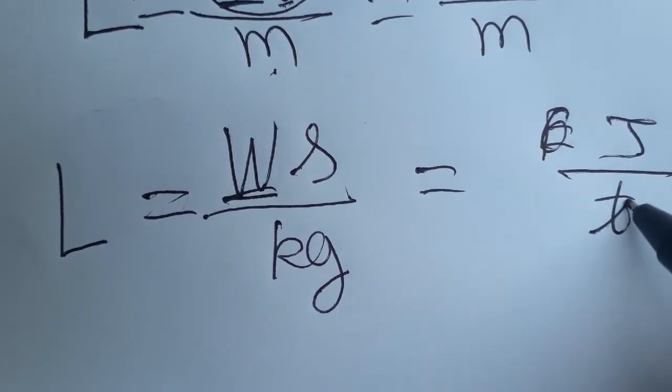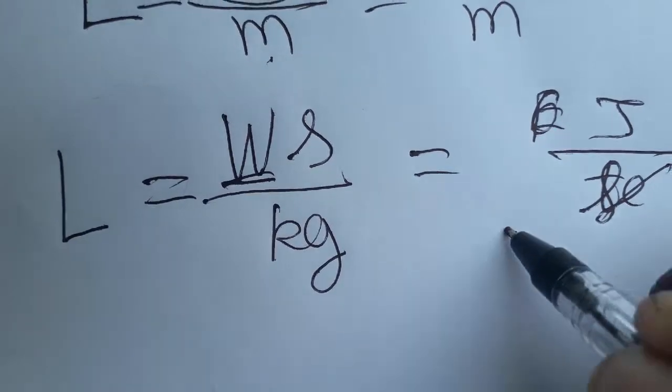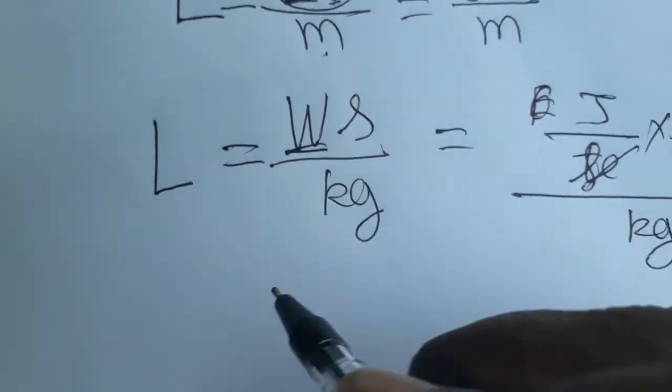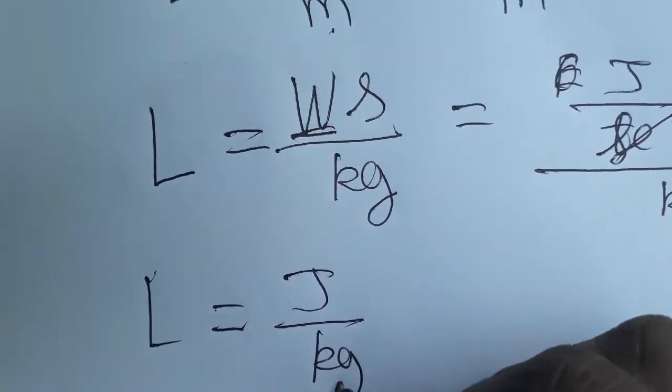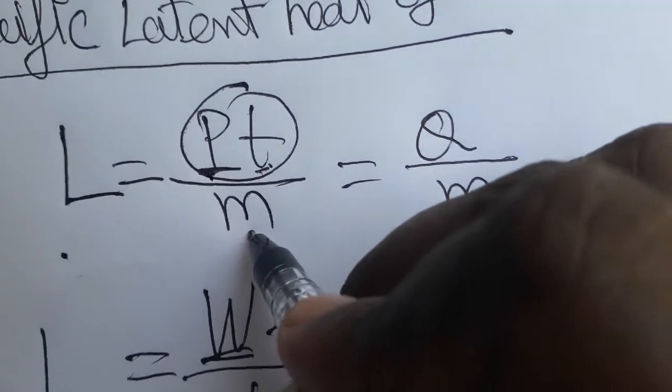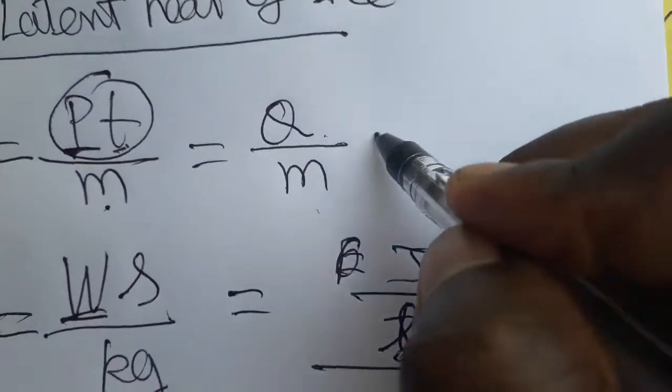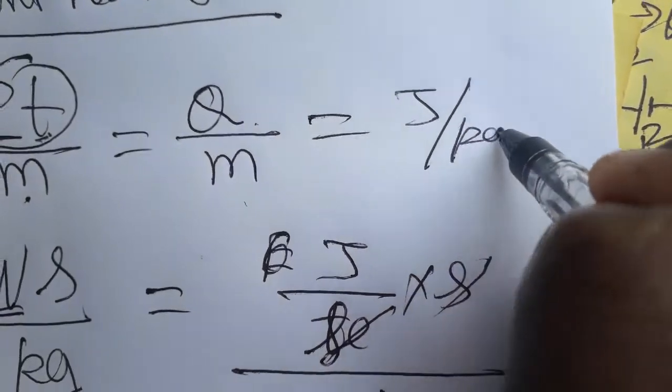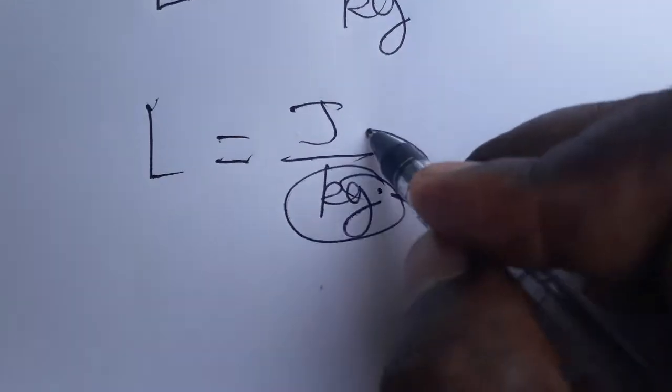Energy by time is joules per second, into second. Second cancels, joule per kg. Finally we will get latent heat, it's joule per kg. So latent heat we have two formulas: power into time per unit mass, or energy per unit mass. Joule per kg is the final SI unit.